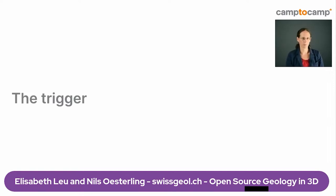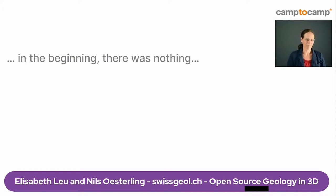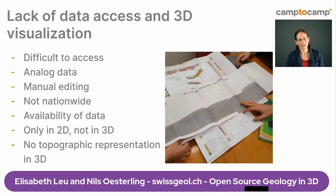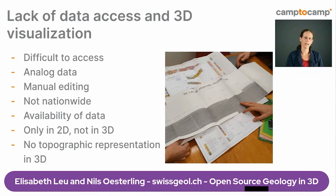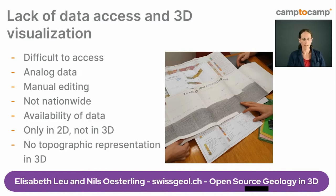First, about what triggered the project. In the beginning, there was nearly nothing. Switzerland has a lot of geological data, but it is hard to get. There is still a lot of paper-based data, and digital data is often processed and delivered manually. Not only the form but also the content can be a challenge — data often covers only a small part of Switzerland, and its quality can vary greatly, from very precise in one area to very rough or even non-existing in another.